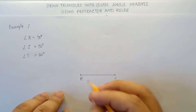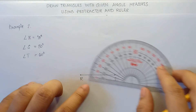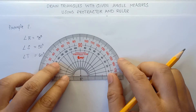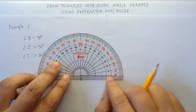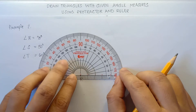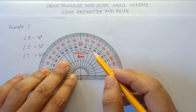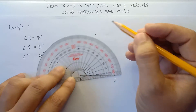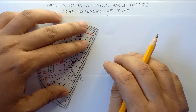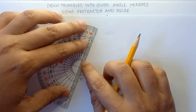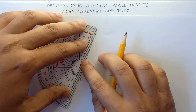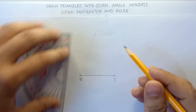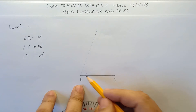Angle R is 70 degrees. From this point, align the center part of your protractor, then align 0 in this particular line because your angle forms upward. Use the inner numbers for the angles: 10, 20, 30, 40, 50, 60, 70. This will be our guide for the angle — then sketch a line. This gives us angle R at 70 degrees.